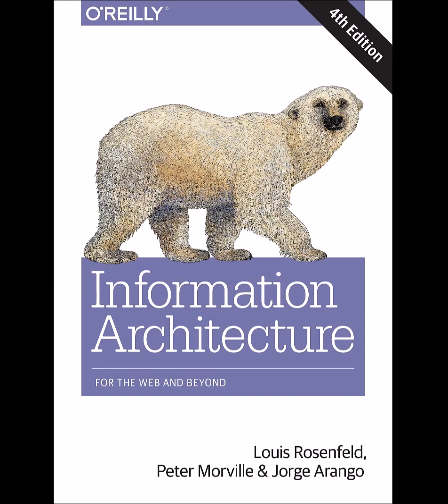Recap of Chapter 12. An information architecture strategy serves as a bridge between research and design. The IA strategy provides a high-level conceptual framework for structuring and organizing an information environment. You should start considering possible strategies before research begins. The main deliverable of the strategy phase is the strategy report. We find it useful to create a project plan for the design of the information architecture as part of the strategy phase. You're not done when you've created the report — you also need to present and discuss it with stakeholders.